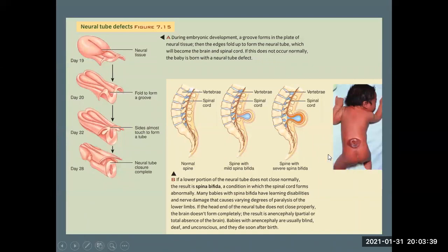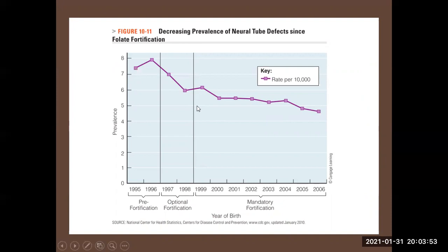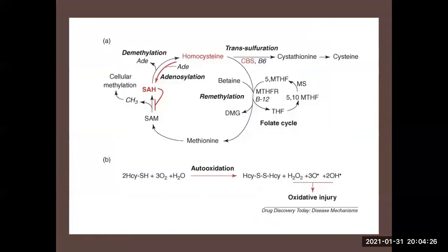As we mentioned before, deficiency of folic acid may cause neural tube defects in newborn babies. For this reason, to avoid folic acid deficiency, governments decided to do fortification, adding folic acid to flour. The fortification of grains led to a decrease in deficiency of folic acid and neural tube defects after the fortification of grains.